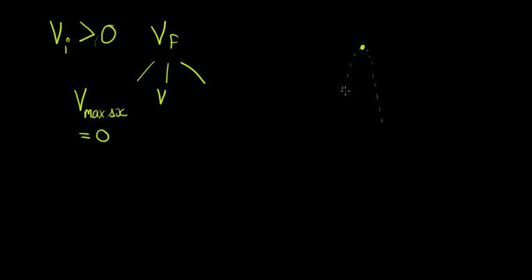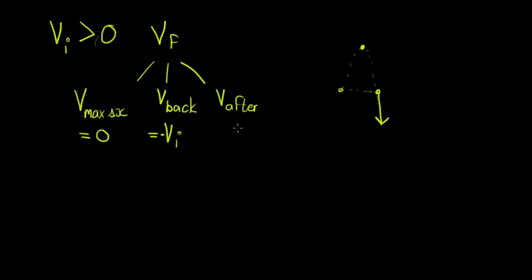Second, the future velocity when it returns to the point from where it was launched — the future velocity 'back' — will be the same magnitude as the initial velocity but negative, because it's in the opposite direction. Third, the future velocity 'after', if it falls further than where it was launched, will be greater in magnitude than the initial velocity but also negative.